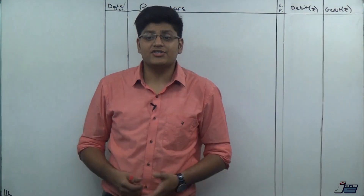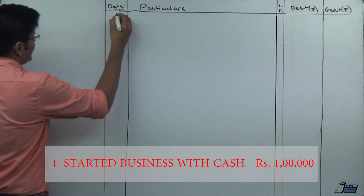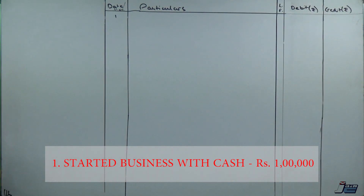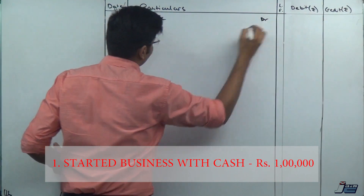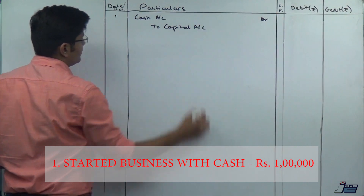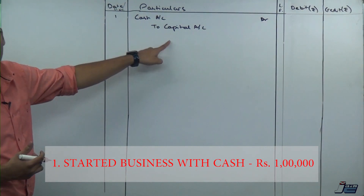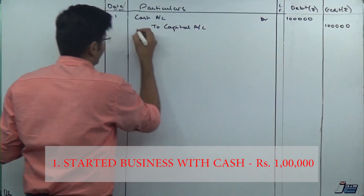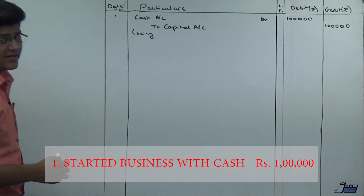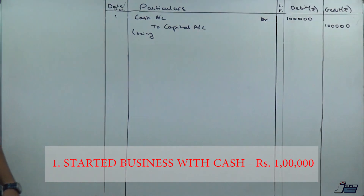We start off with journal entry number one: started business with cash, rupees one lakh. Cash is coming into the business, so Cash Account is debited. What is going out? Capital Account — nothing is actually going out, but the capital is the reason why cash is coming in. So: Cash Account debit to Capital Account. Amount is rupees one lakh. The narration would be 'cash brought into business.' First entry is clear.